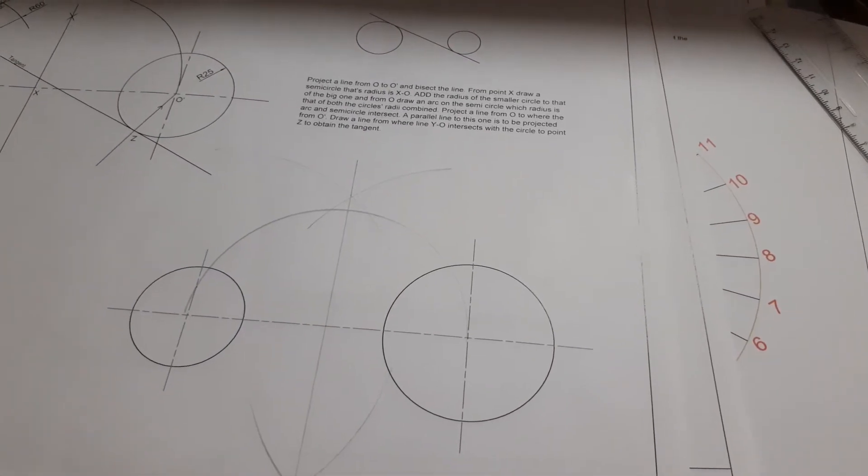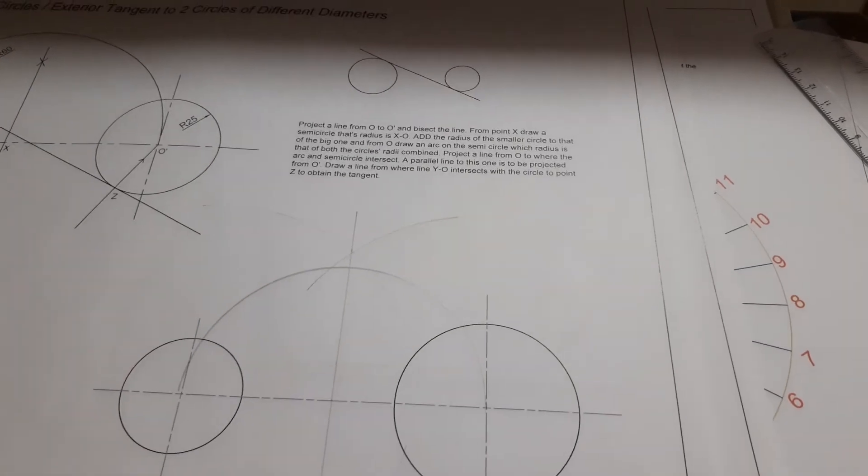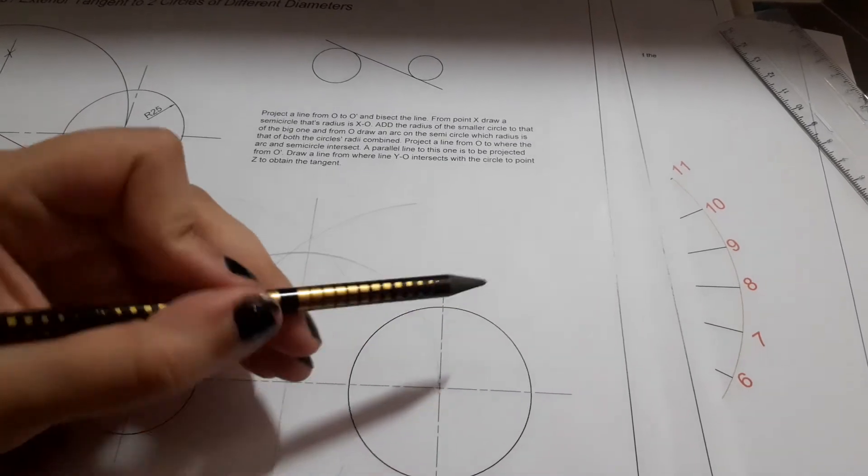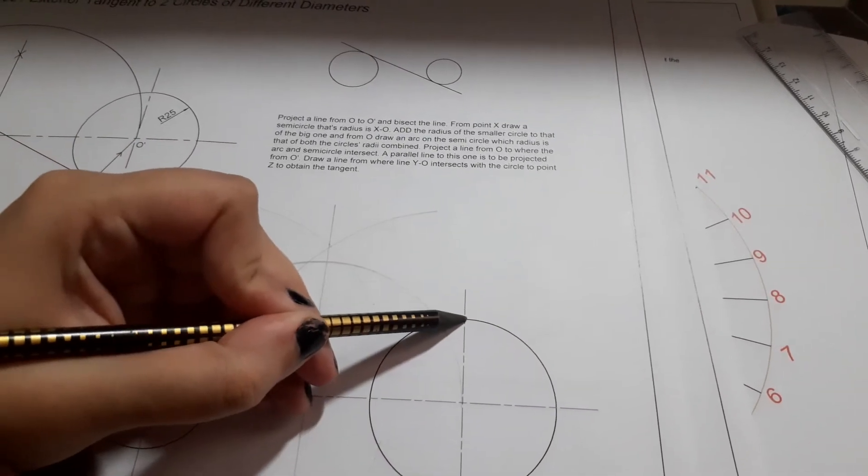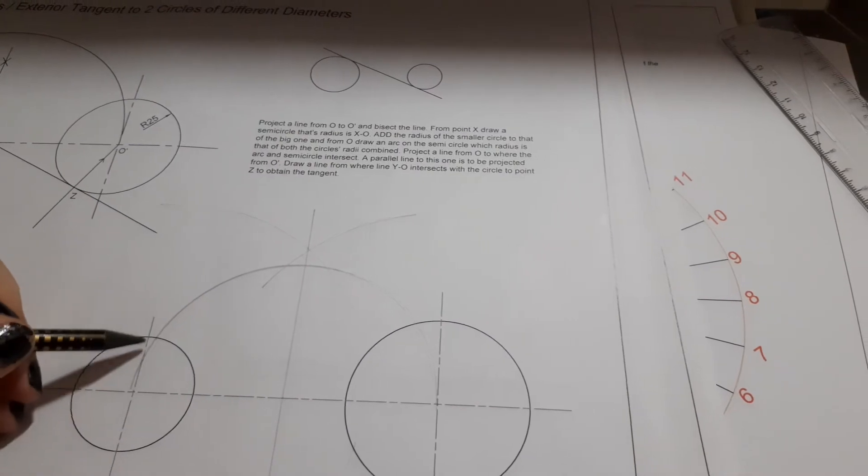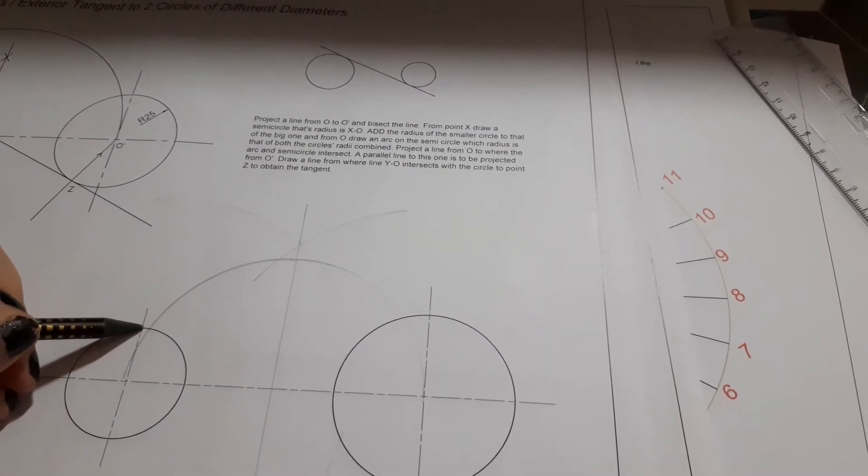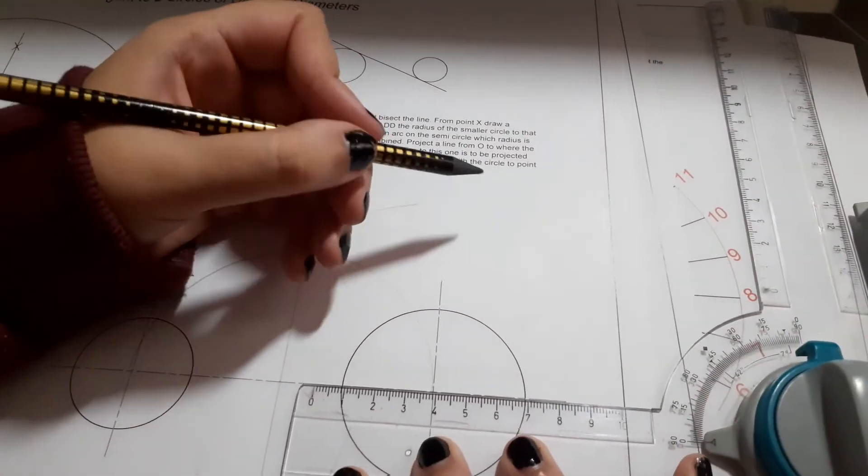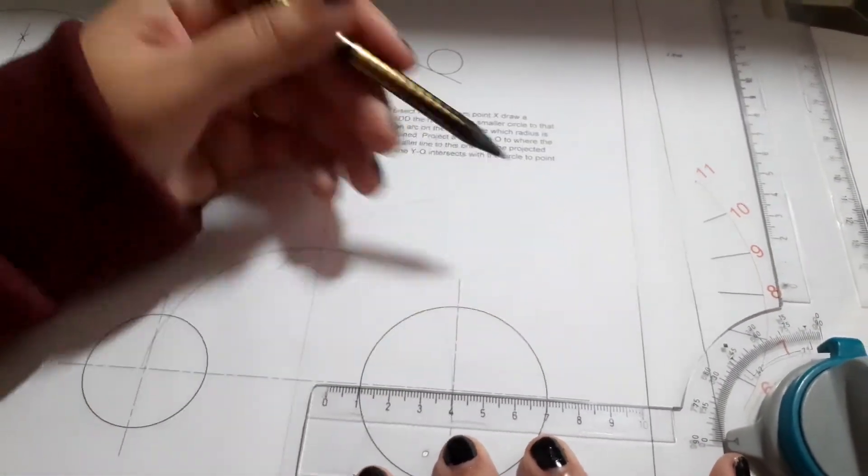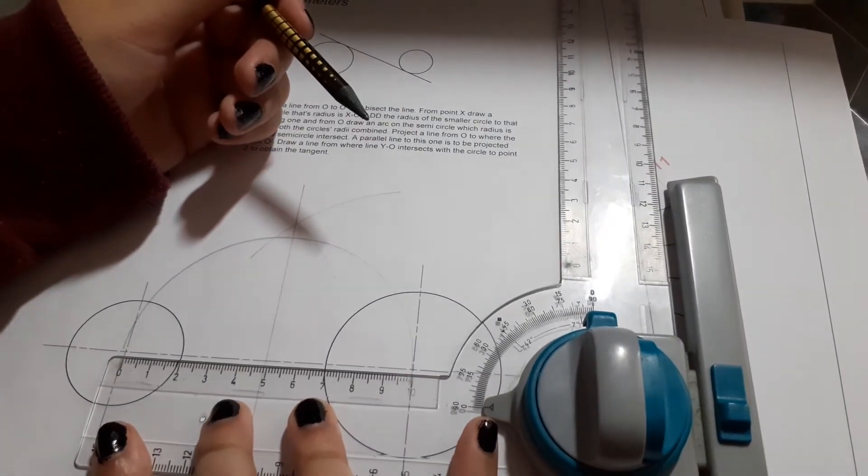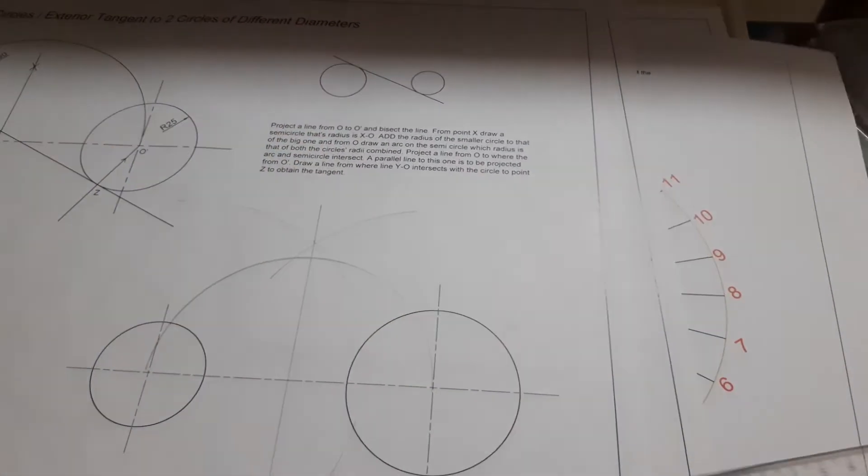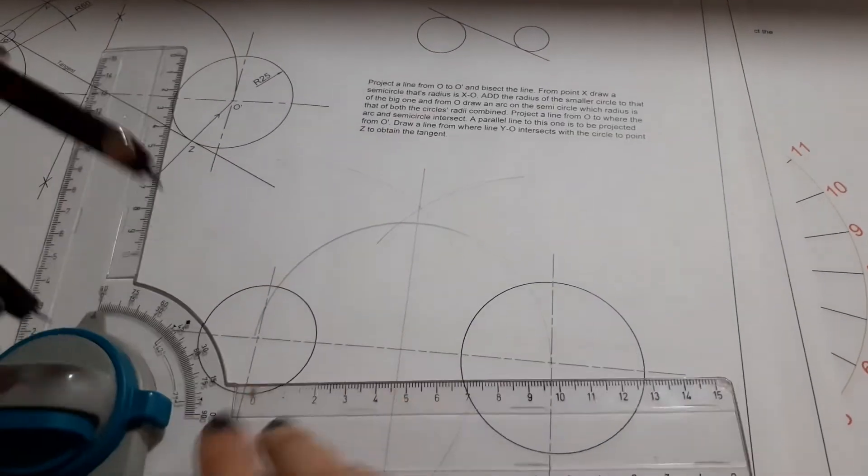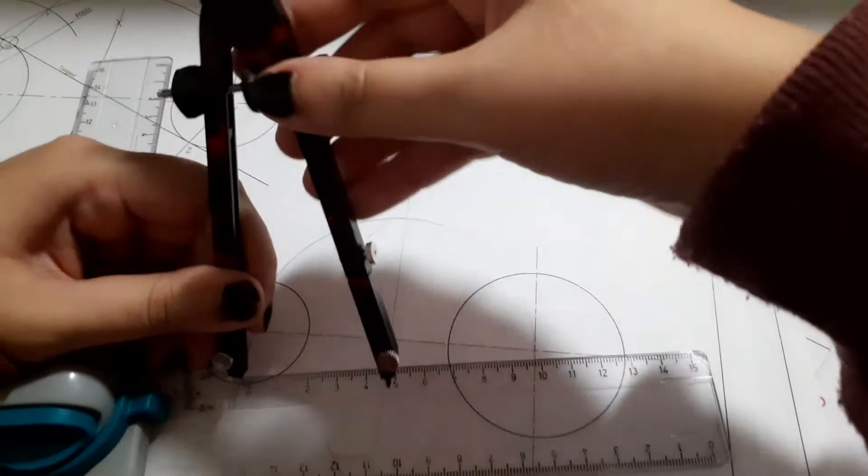Now we're going to join the radius of one circle to the radius of the other circle. Let's check how big they are - this one is 30 and this one is 20, so 20 plus 30 equals 50. We open our compass to 50.